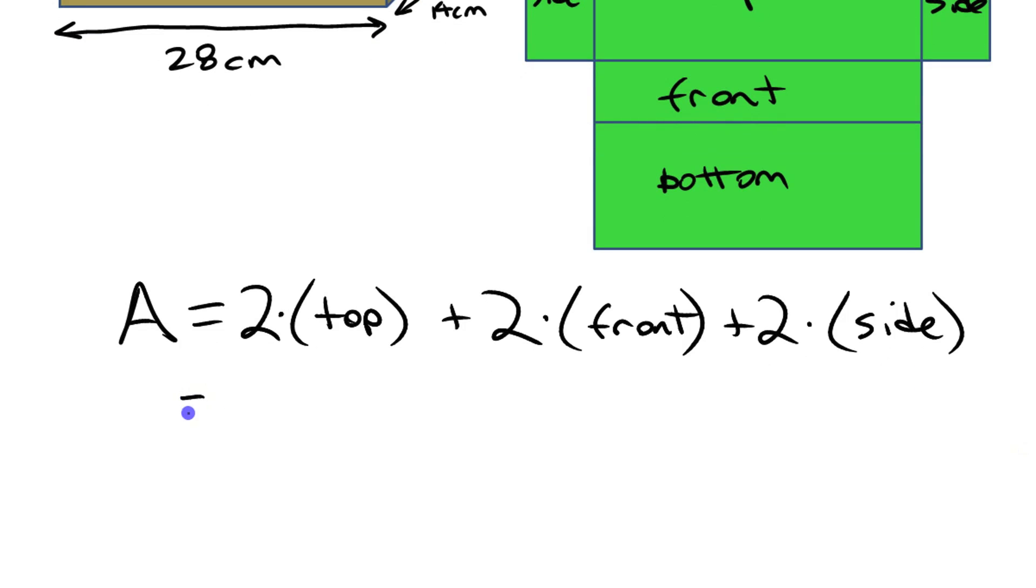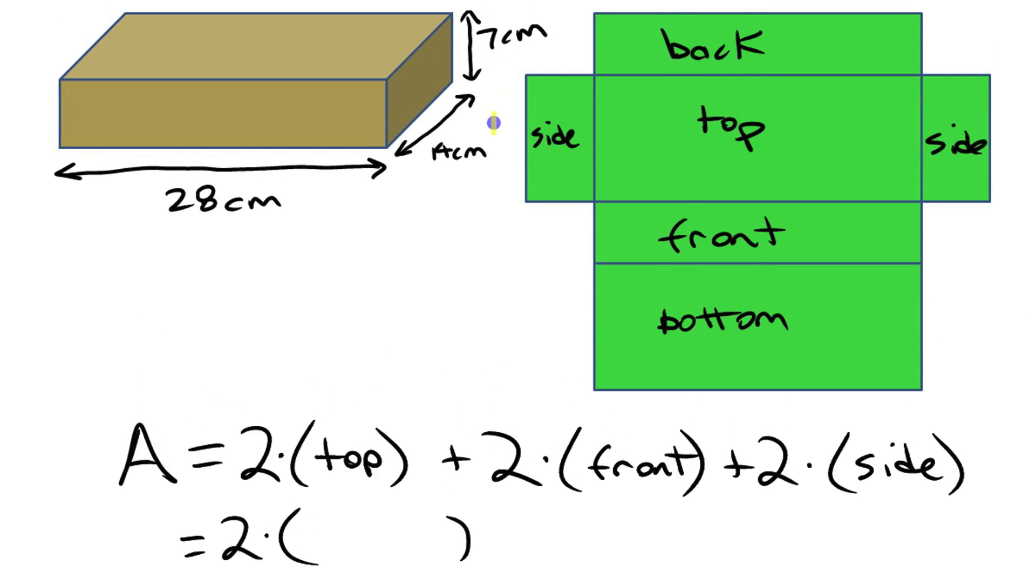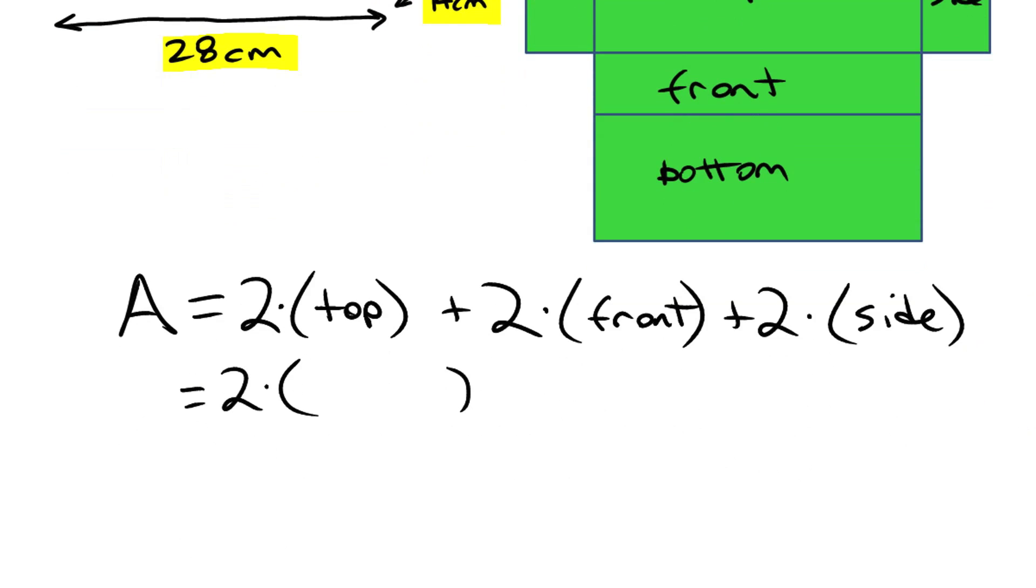To work out each of these areas here, we need to put the dimensions in. Dimensions of the top. Okay, the top's the big one. The top is the one that's 14 by 28. So let's put that in there. We have 14 centimeters times 28 centimeters.